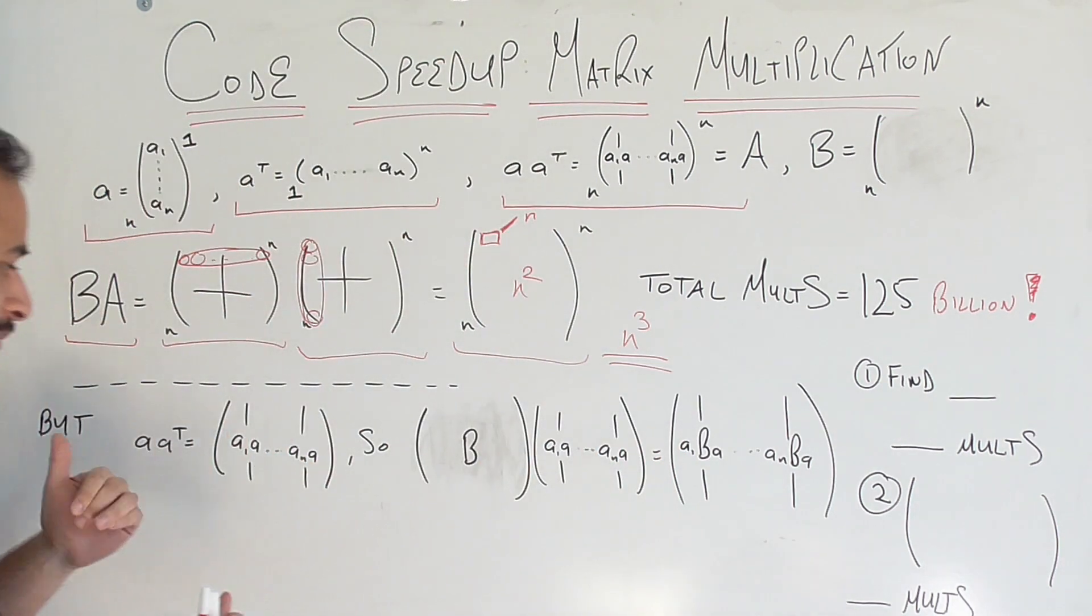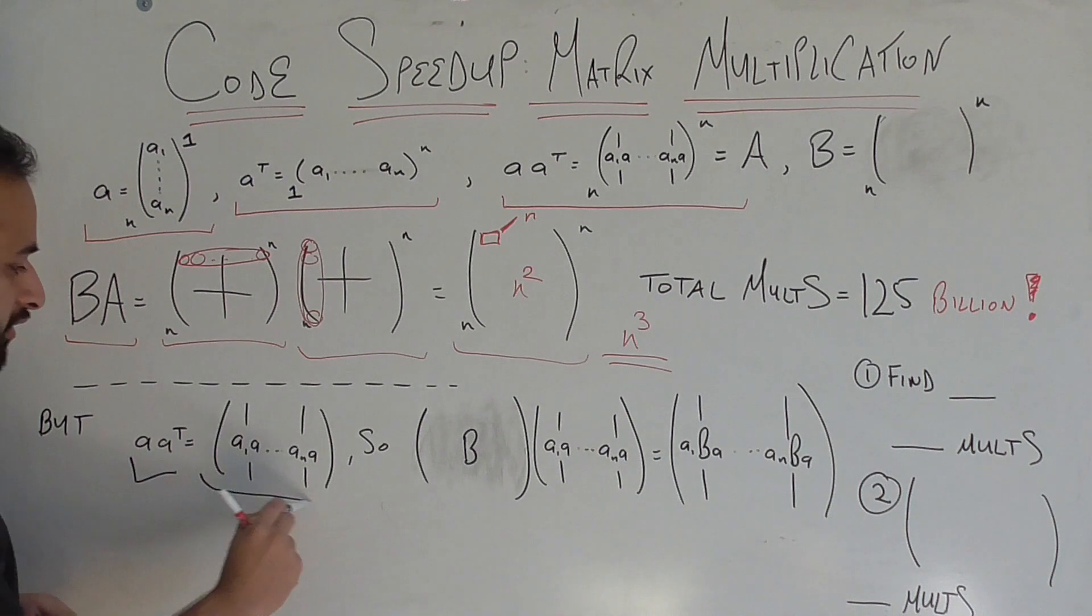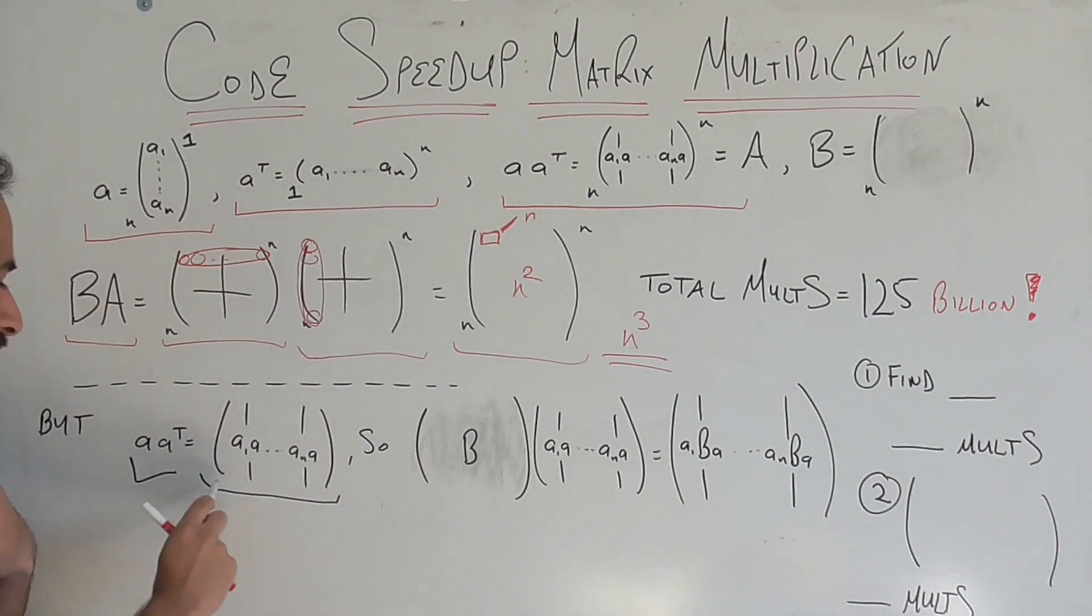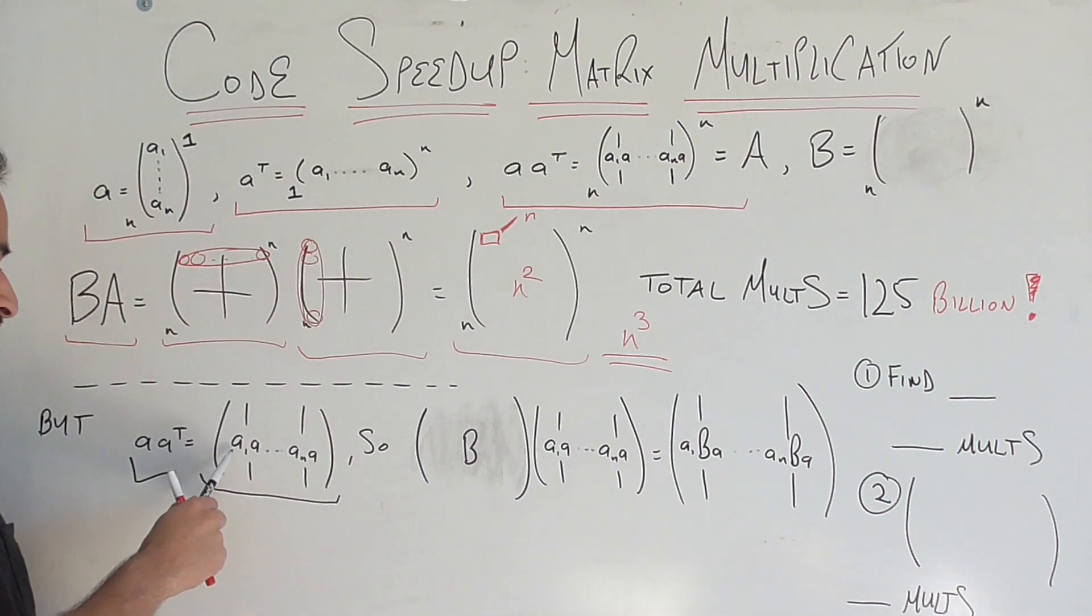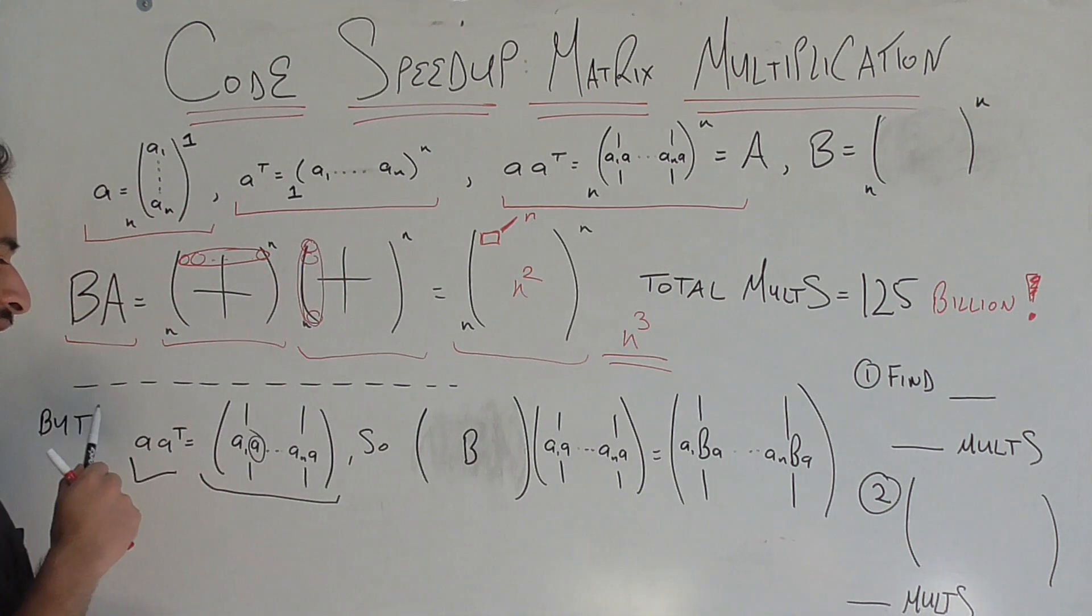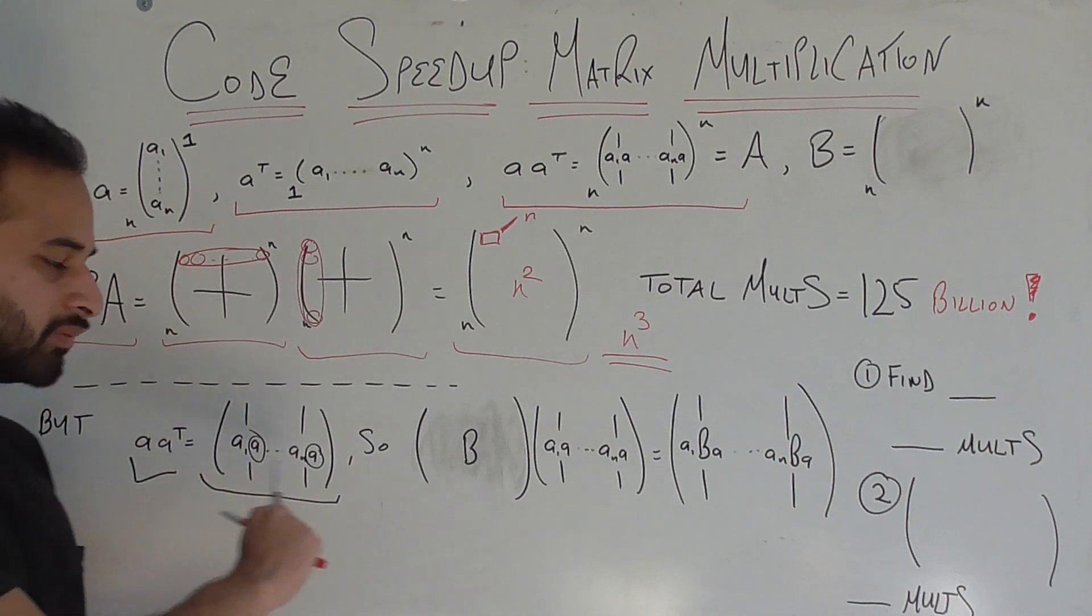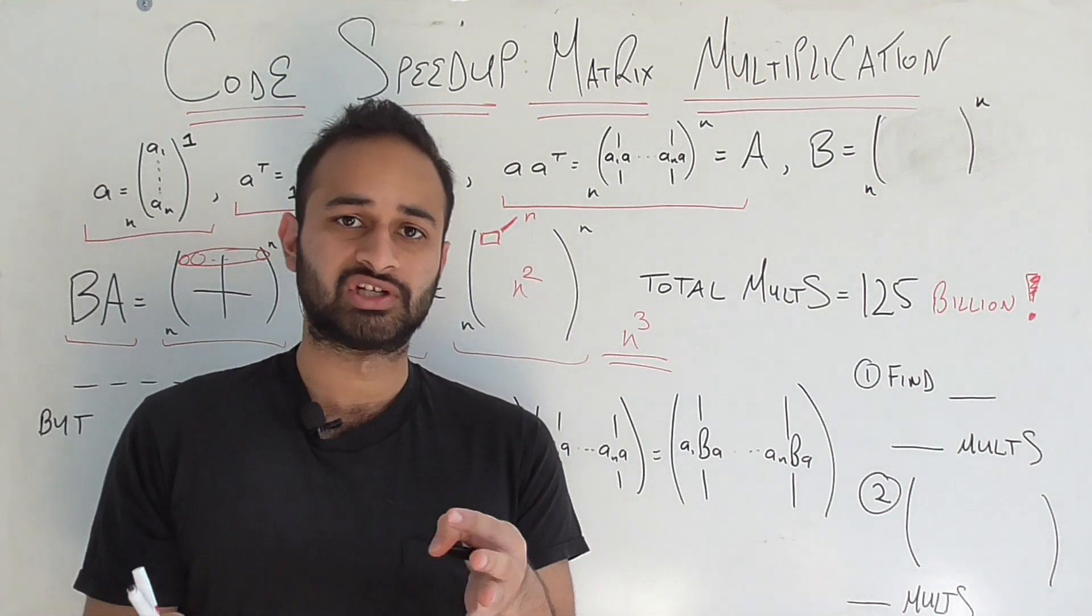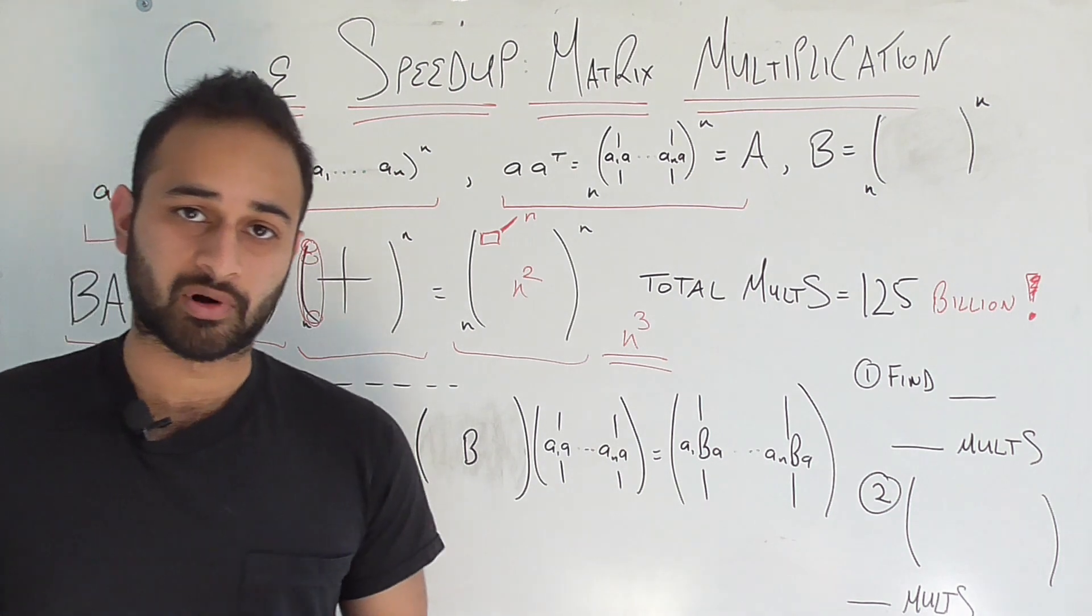And I just wanted to show you that process down here. So again a·a^T which is here is given by this matrix. This matrix is what we call rank one. Because every single column in this matrix is scalar multiple of the other columns in the matrix. For example the first column is a1 times this vector a. The last column is an times this vector a. And every column in between is just some scalar multiple of the vector a, which is what we're going to use to take advantage of the problem.